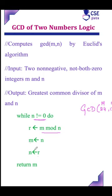So when n value is 0, the loop will exit and it will return m as the result. So here 24 is nothing but m and 12 is nothing but n value.